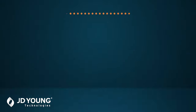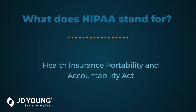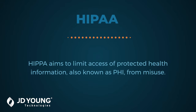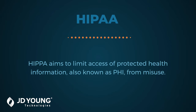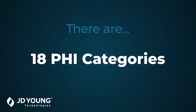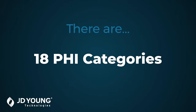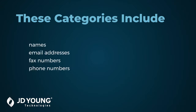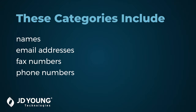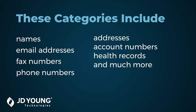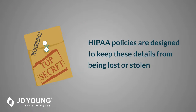HIPAA stands for the Health Insurance Portability and Accountability Act of 1996. This act aims to limit access to protected health information, also known as PHI, from misuse. There are 18 categories of PHI in total, ranging from names and email addresses to fax numbers, phone numbers, addresses, account numbers, health records, and much more.